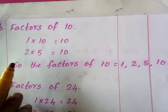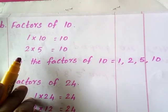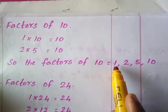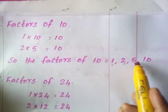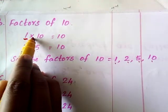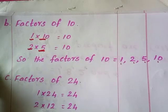So here once you find out what the factors of 10 are, we can say: 1, 2, 5, and 10. So these are the factors of 10.